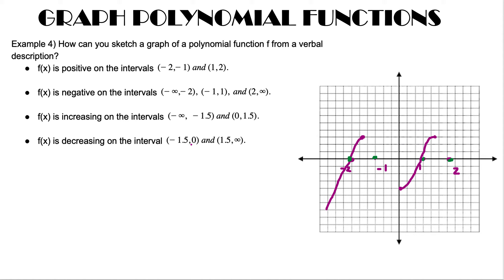The function is decreasing from minus 1.5 to 0. When it is increasing it has to go through the intercept point, and then decreasing it connects down to 0 to join the other part. Then it is decreasing from 1.5 to infinity — from 1.5 it goes to the intercept and then down to infinity. So this is the graph of the function we can sketch from the verbal description.